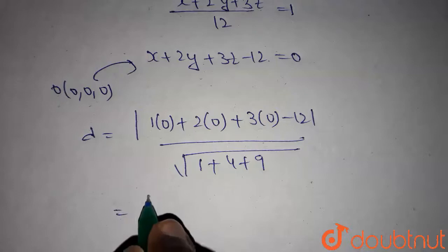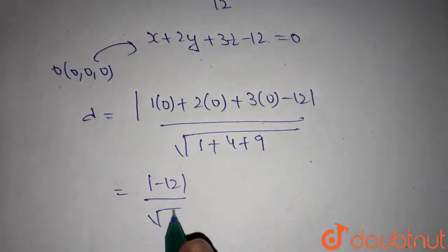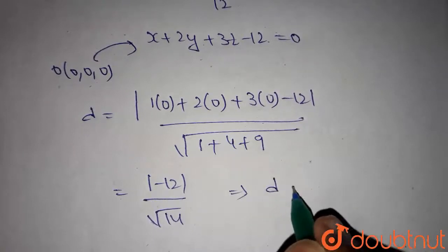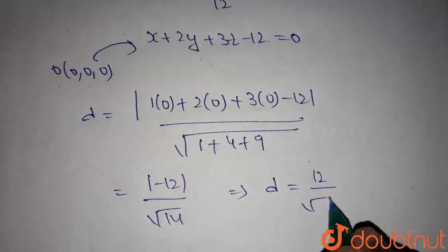So in the numerator we get modulus of minus 12, in the denominator we get root 14. So the distance from origin to the plane of the given condition is 12/√14 units.